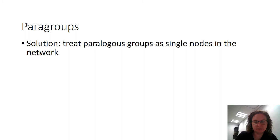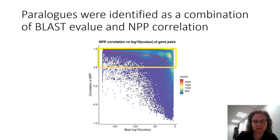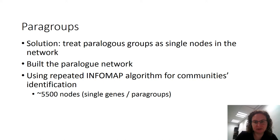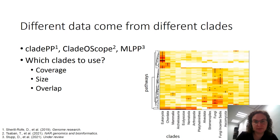What we did is use paralog groups as single nodes in the network, taking all the genes that act similarly both in terms of the BLAST e-value and in the correlation in NPP. We defined all these gene pairs as parts of a network of paralogs, then used the Infomap algorithm to identify communities of paralogs, which we call par-groups, and we use them as single edges in the network.